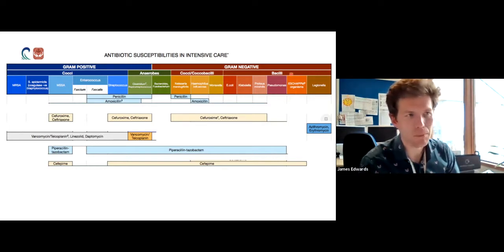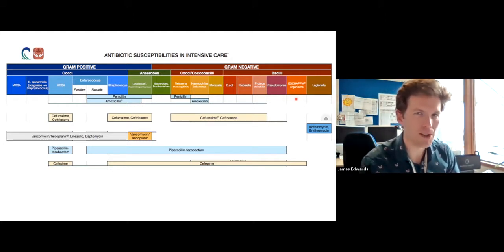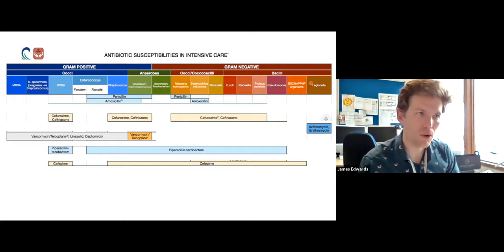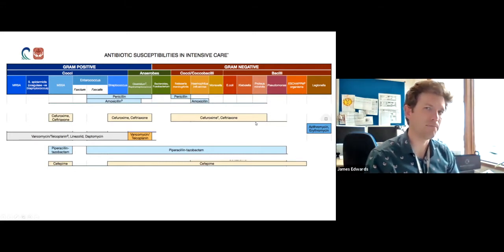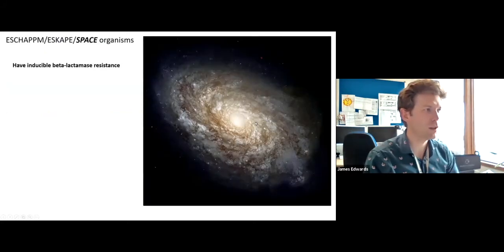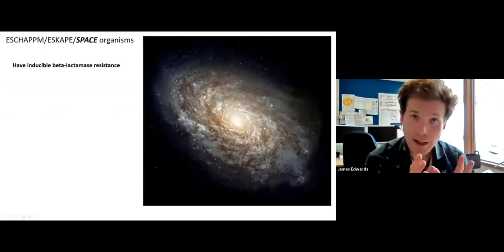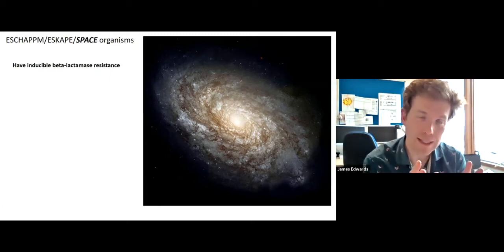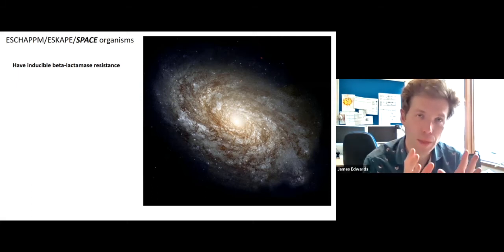These are the ESCHAPPM, ESCAPE or SPACE organisms. I'm going to refer to them as SPACE organisms. What are they? This is a collection of different organisms, gram negatives, that have inducible beta-lactamase. The beta-lactamase, remember, is the enzyme that breaks down the antibiotic, and it's inducible.